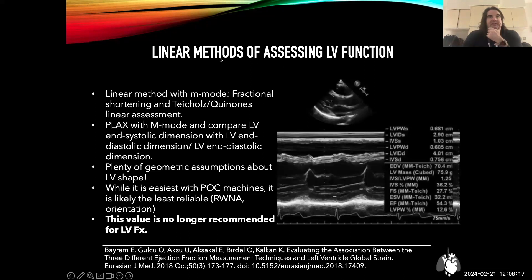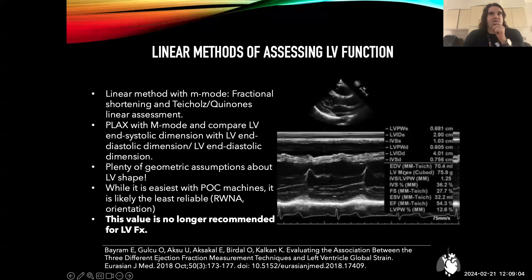Historically there were often linear methods. M-mode was one of the first techniques used in ultrasound. You could look at the interventricular septum, identify the valve, look further to see the inferolateral wall, and compare the dimensions of systole versus diastole — what was called fractional shortening, which measures how much the cavity changes between diastole and systole. Historically this was transformed into an ejection fraction using either the Teichholz or Quinones method. While mathematical and popular for many years, it's now no longer recommended because it's a single dimension with limitations including regional wall motion abnormalities and the overall shape and position of the M-mode.